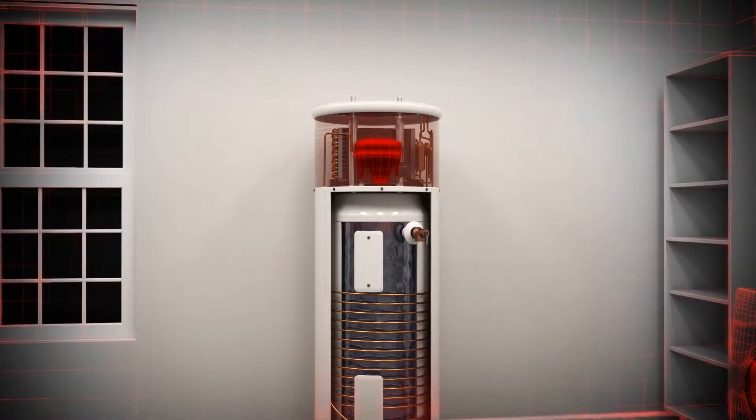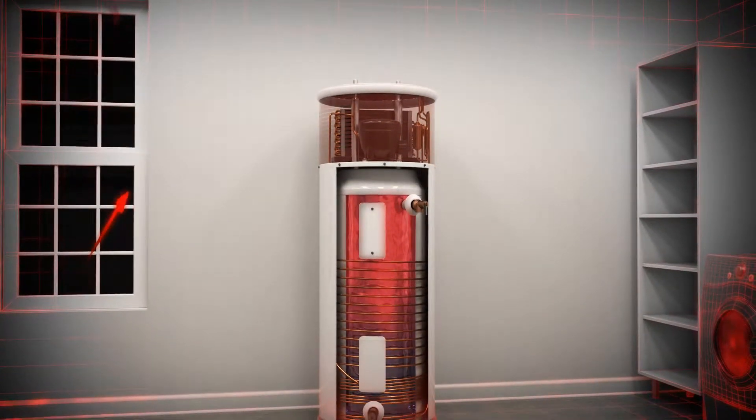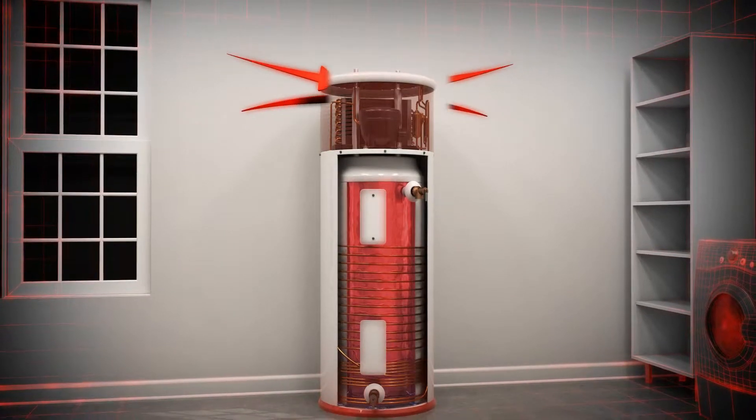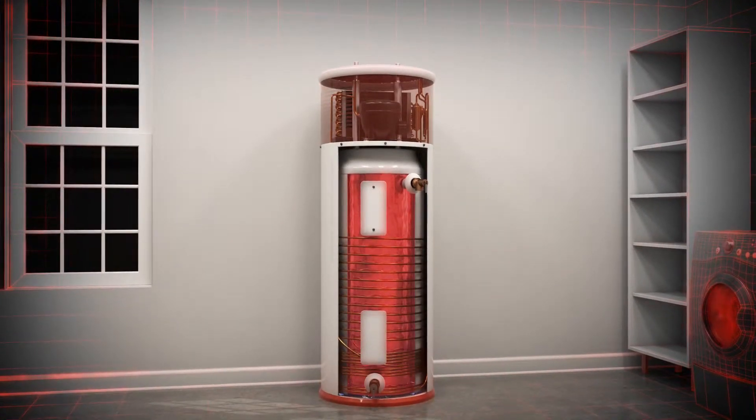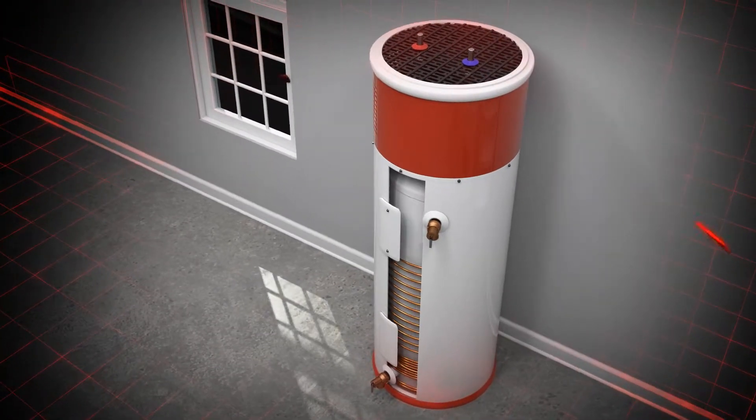The refrigerant is then pumped through a compressor which further increases the temperature. Heat is transferred throughout the tank by water or refrigeration circulation process. This process of moving heat instead of generating heat makes the heat pump water heater two to three times more energy efficient than a standard water heater, saving you money and energy.